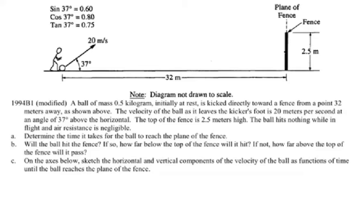In this question from 1994 AP Physics B, they've modified it a little bit. The question says a ball of mass 0.5 kg initially at rest is kicked directly toward the fence from 32 meters away. The velocity of the ball as it leaves the kicker's foot is 20 meters per second at an angle of 37 degrees above the horizontal. The top of the fence is 2.5 meters high.